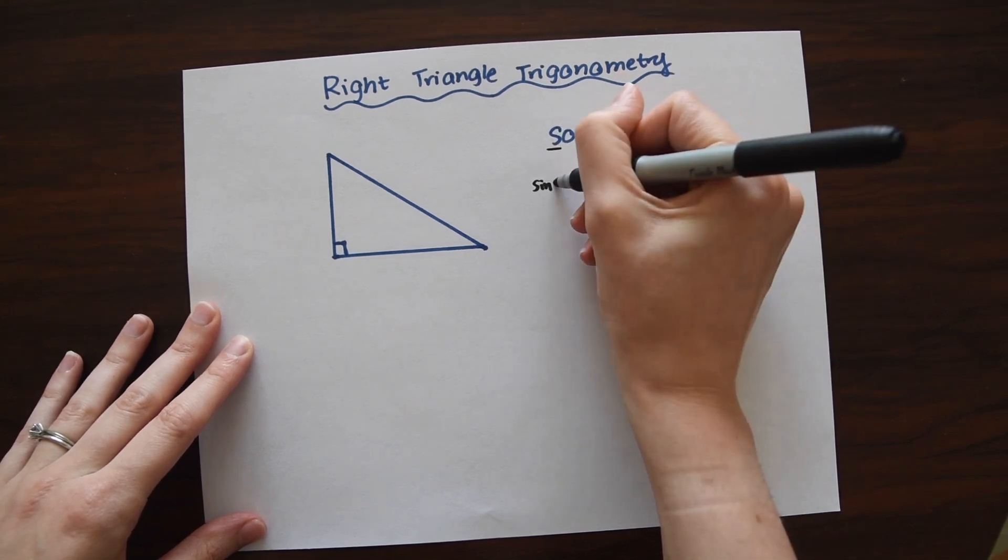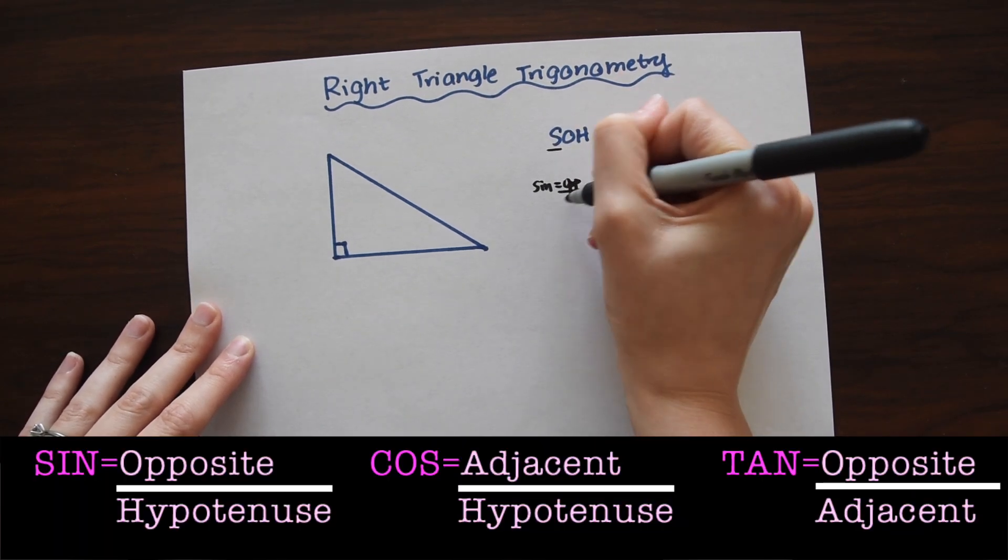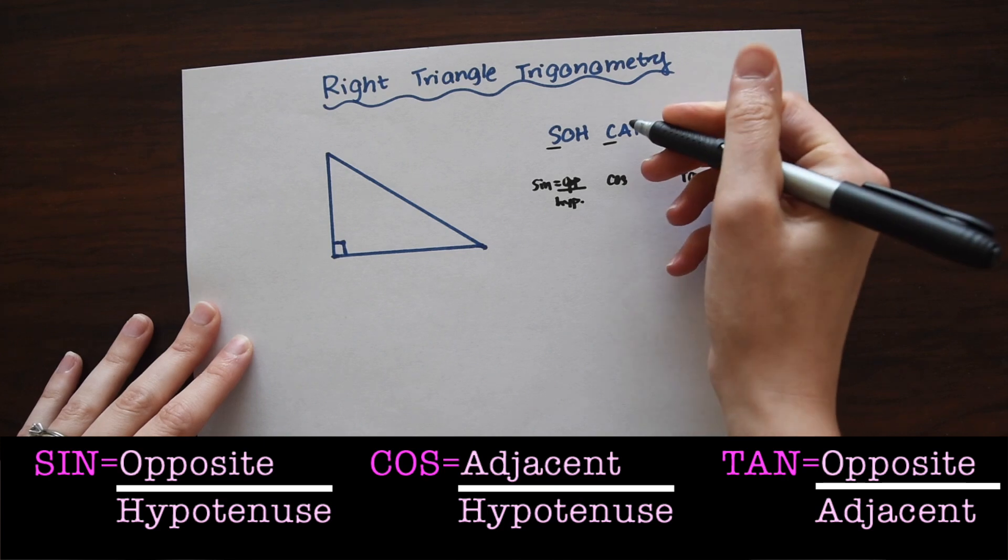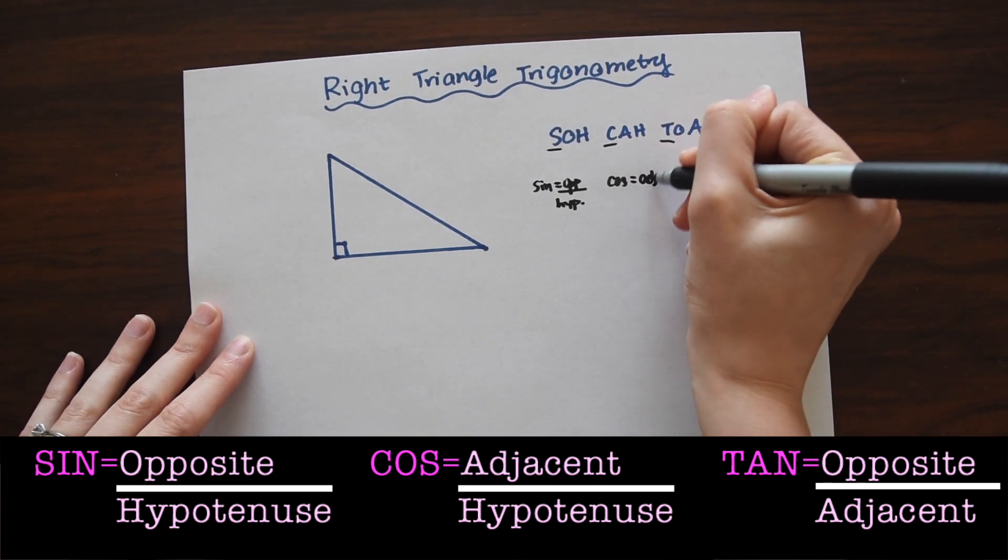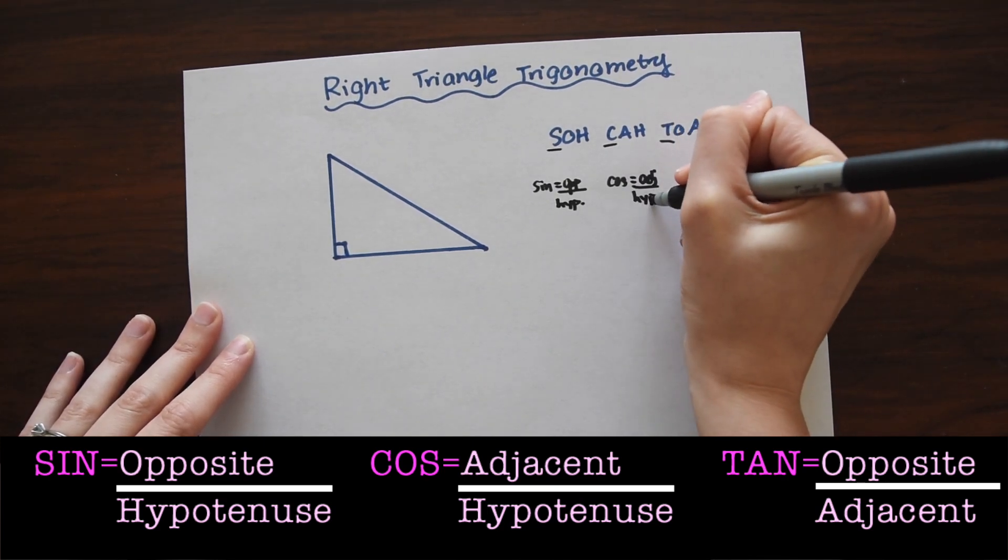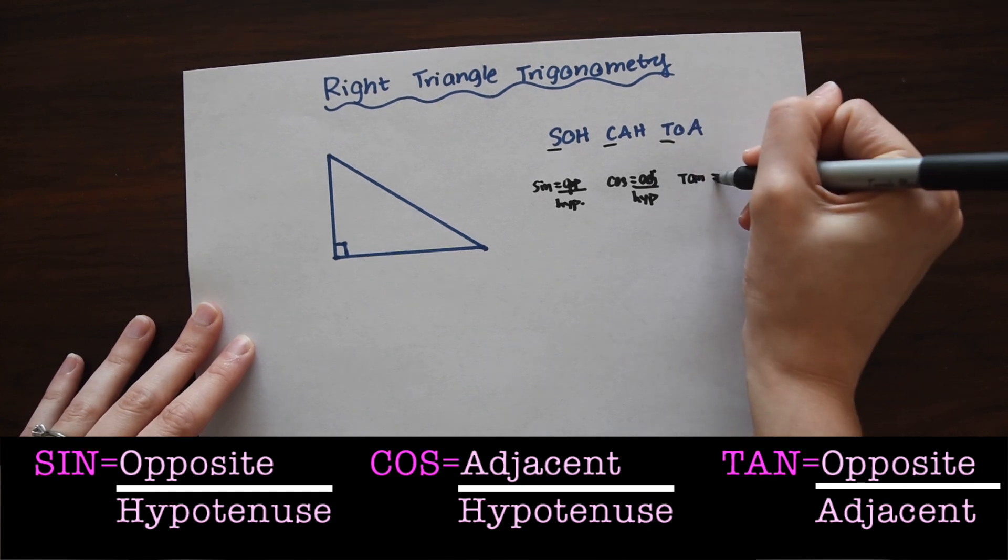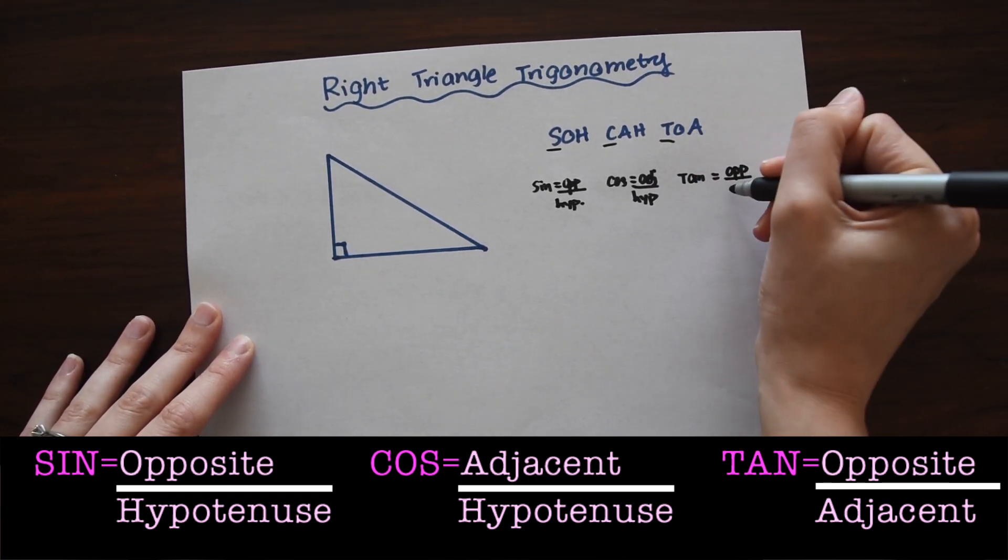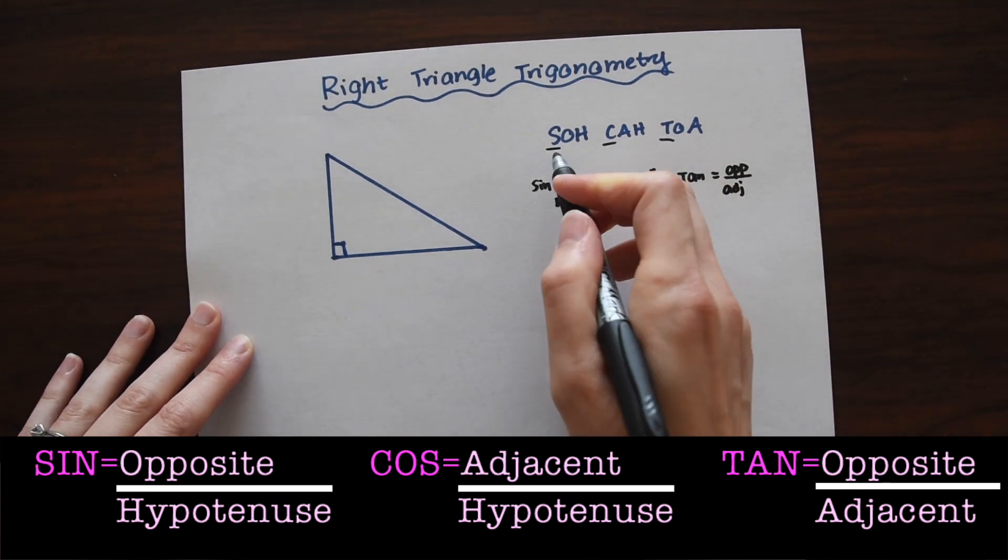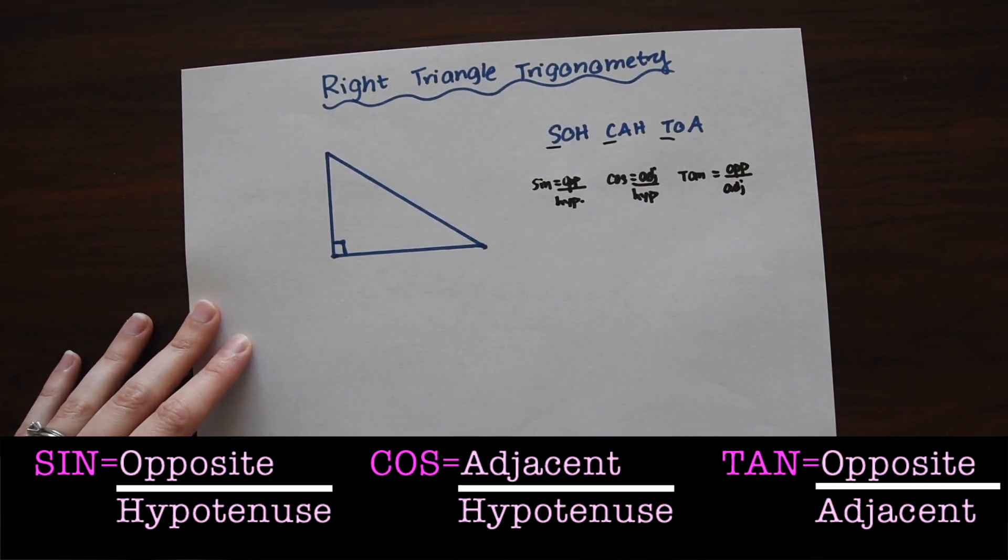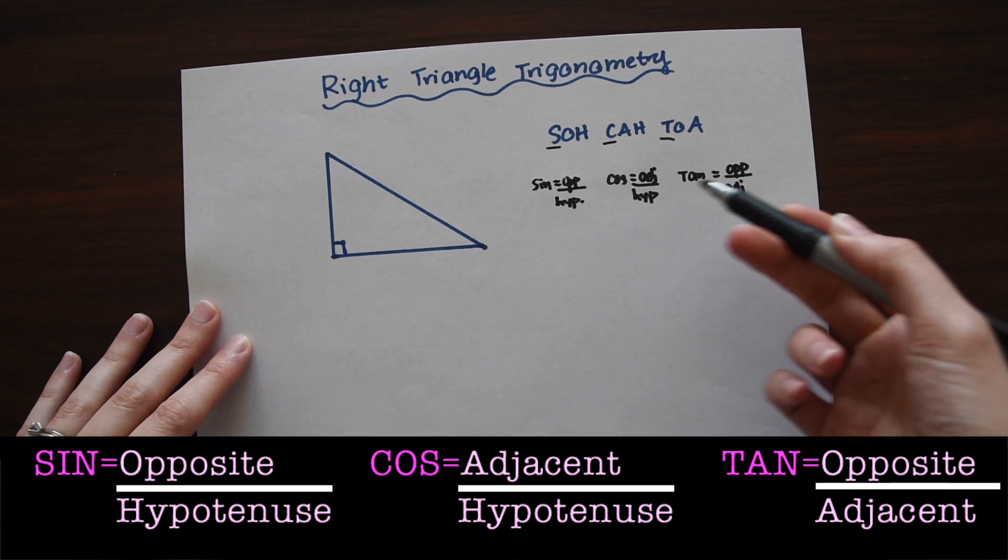So sine is equal to opposite over hypotenuse. Cosine is equal to adjacent over hypotenuse. And then tan is equal to opposite over adjacent. So we're just following what this says, and SOHCAHTOA is just a great way to remember what each of these ratios are.